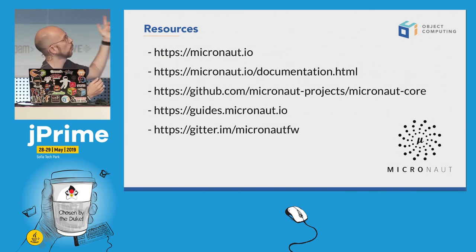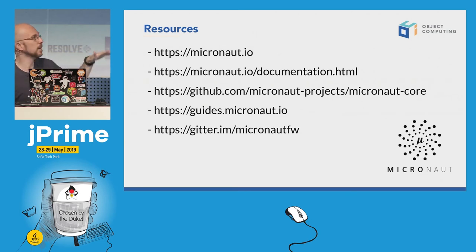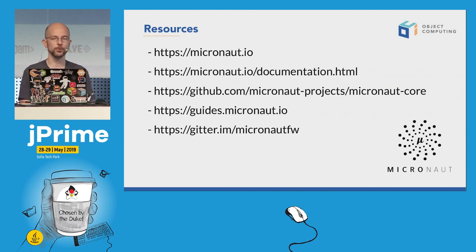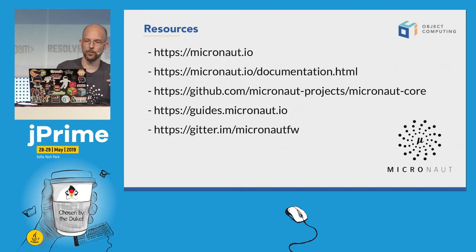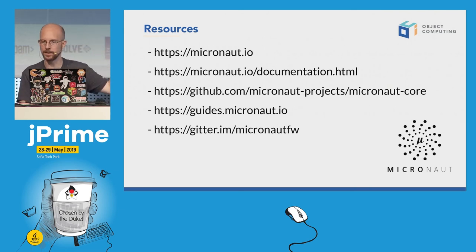Here are useful resources. First, the Micronaut website. Second, the documentation with links to all different modules. Third, the GitHub project. Fourth, guides.micronaut.io — there you'll find 60-75 guides showing you how to do something with Micronaut in 15-30 minutes, all with working code repositories. Topics include distributed tracing with Jaeger and Zipkin, security with JWT, JPA, and creating your first Micronaut application. We publish guides very often. Also, we use Gitter — if you know Slack, it's pretty much the same — and all the development team is there to help.